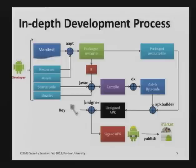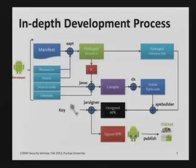The output of this stage is an unsigned APK. The developer takes his cryptographic private key, passes it along with the unsigned APK through a utility called JarSigner, and generates a signed APK. Note that only a signed APK can be installed on any device — you cannot install an unsigned APK on a mobile device.